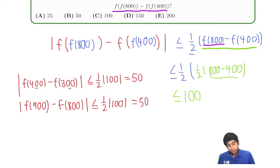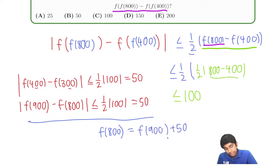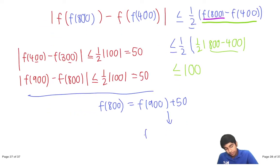So the key thing here is that f(800) can be f(900) plus 50. Let's just look here. Over here, the difference is less than or equal to 50. So f(800) can range from anything f(900) plus 50 all the way.